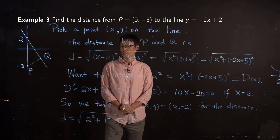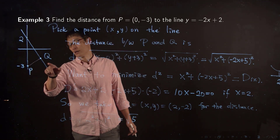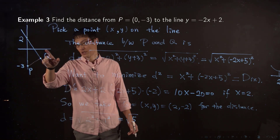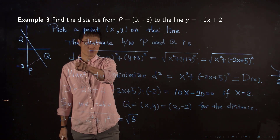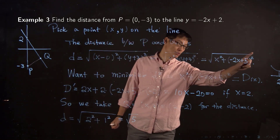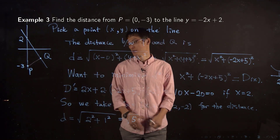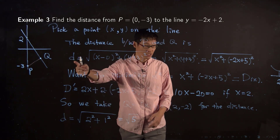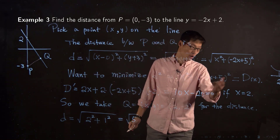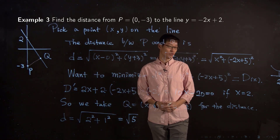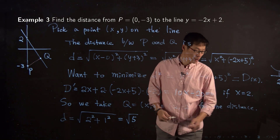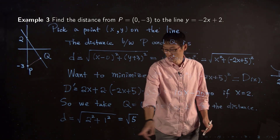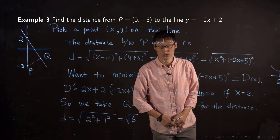This is how to find the distance between a point and a line. You start by picking a generic point (x, y) on the line. The distance formula involves a square root, so instead of minimizing d directly, you minimize d squared to get a quadratic function. Once you find the x-coordinate, you find y as well, and then the distance formula gives you the answer.